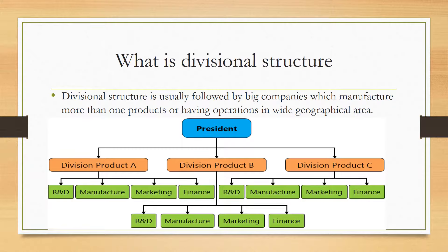If we look at Nestle as an example, each product line like juice and water is an independent unit with its own R&D, manufacturing, marketing, and finance departments. Looking at this diagram, product A, product B, and product C are all autonomous units working independently.